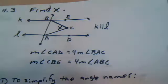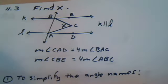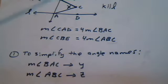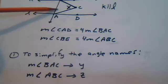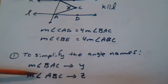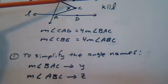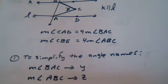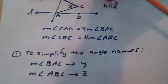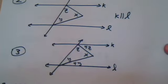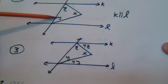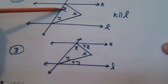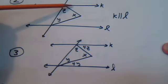To simplify things, we're going to name the angles a little bit easier. We'll say that angle BAC we're going to call y, and angle ABC we're going to call z. So this is x, y, z. Now if we call this y, they told us this was four times as big, so this would be 4y. We call this z, and they told us that this was four times z, so that angle is 4z.